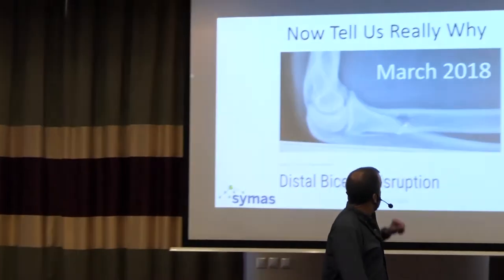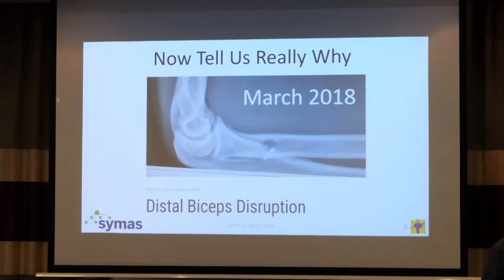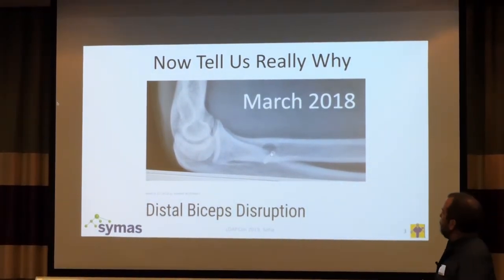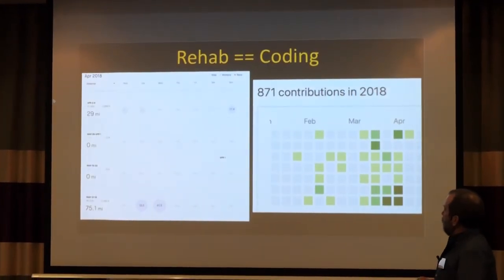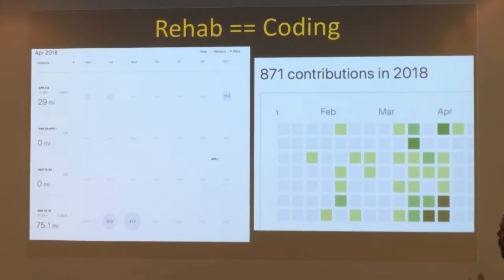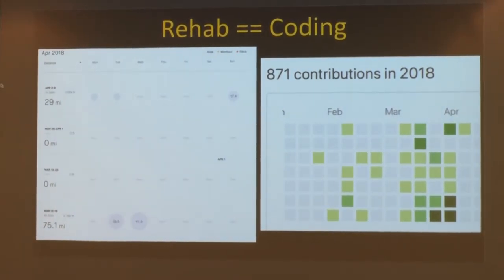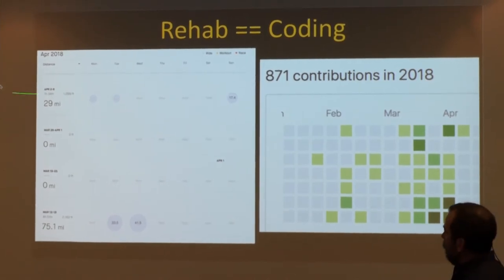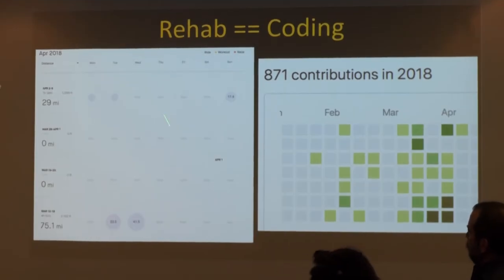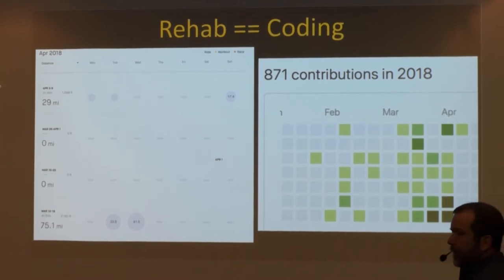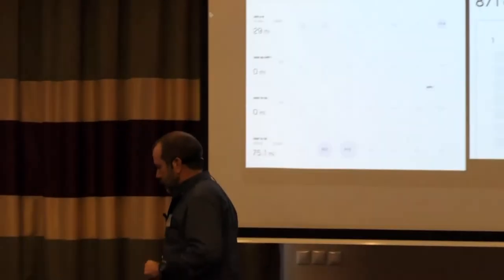No, not really. I got injured in March of 2018 — I tore my right bicep off my forearm. I don't know if you guys know, but I'm kind of a cyclist and I ride a lot. That's a map of a log of my training. If you see a bunch of zero miles on weeks, there's going to be a corresponding increase in commits in GitHub.